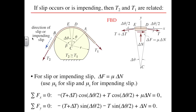Since it is presumed that we are on the threshold of slip everywhere, the magnitude of that friction force is the coefficient of friction times the normal force. Writing equilibrium component equations in x and y, we get the two equilibrium equations shown here. We will get a governing equation for the changing relationship in tension by letting this small finite angular increment become a differential increment.